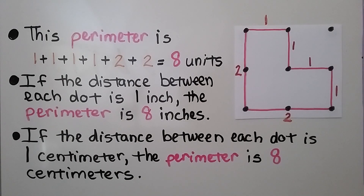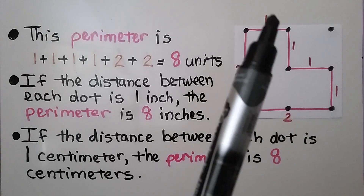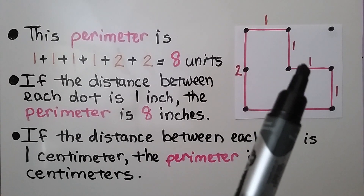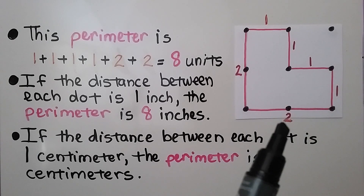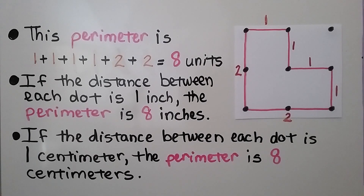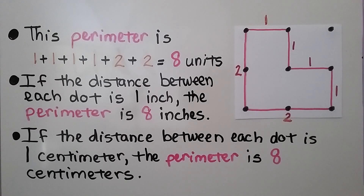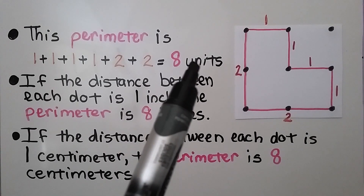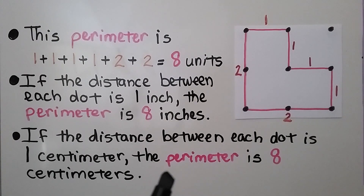Now take a look at this drawing. This perimeter is one plus one plus one plus one plus two plus two, which equals eight units. If the distance between each dot is one inch, then the perimeter is eight inches. If the distance between each dot is one centimeter, the perimeter is eight centimeters. It just said units, so that means they haven't determined if it's inches or centimeters or feet or yards or meters.